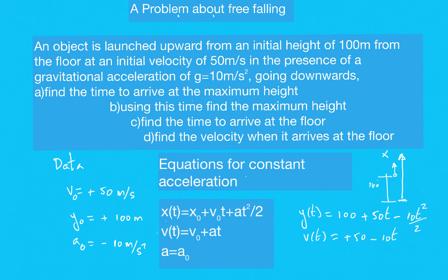The equations are written in y instead of x, because this is vertical motion. At the initial point there are two conditions: the initial height and the slope of the y(t) graph at t equals zero — that is, when y equals 100 meters. There are always two initial conditions: the initial position and the initial velocity.